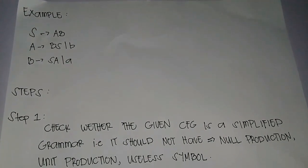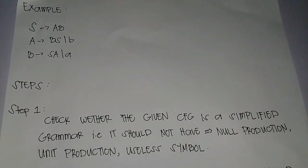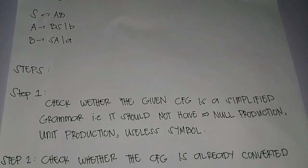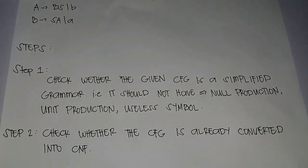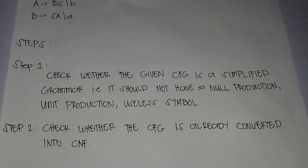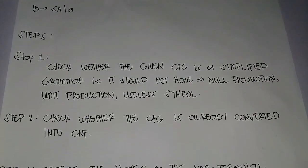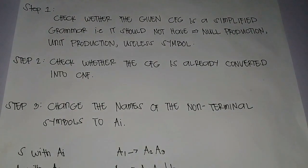These are the steps. Step 1: Check whether the given CFG is a simplified grammar. It should not have null production, unit production, or useless symbols. Step 2: Check whether the CFG is already converted into CNF.